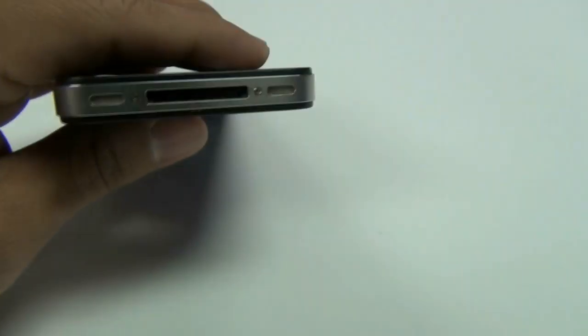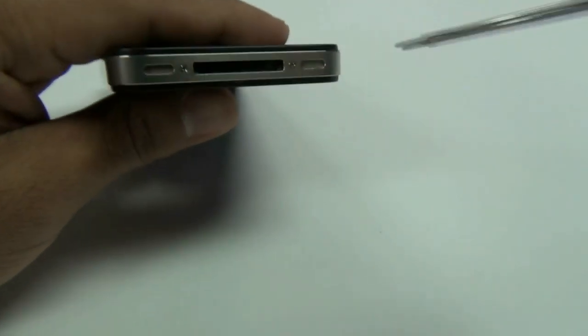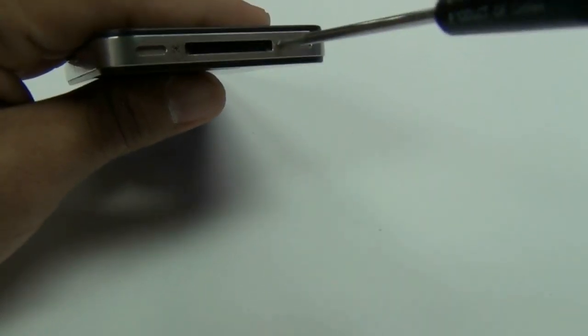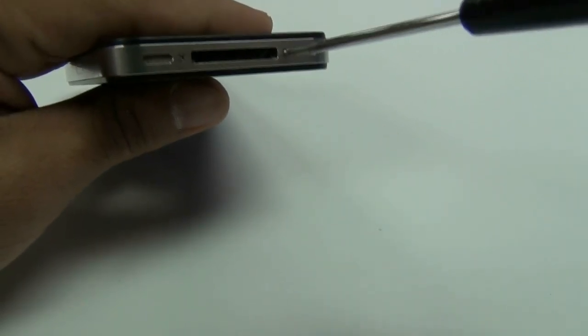To begin the disassembly of your iPhone 4 GSM version, you will first need to remove the back housing cover. Using a Phillips 00 or Pentalobe 5 star screwdriver, remove the two screws on the bottom of the iPhone 4.